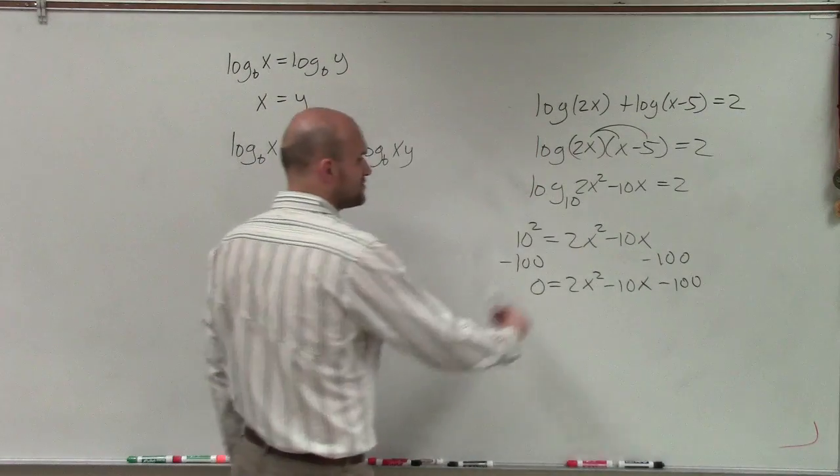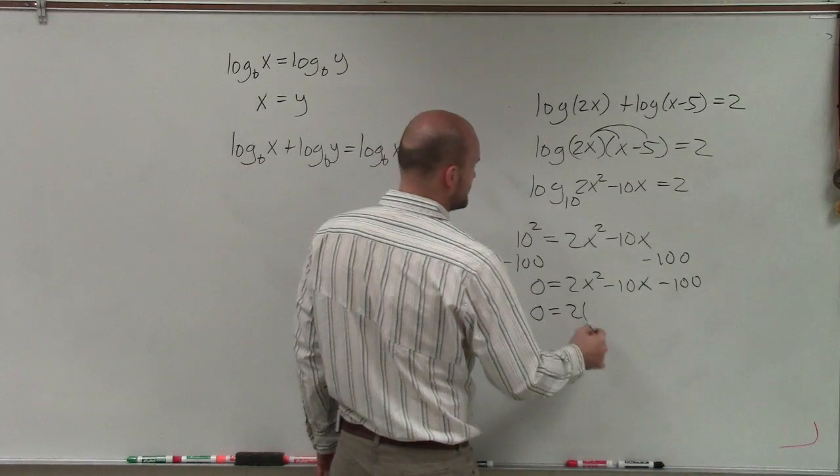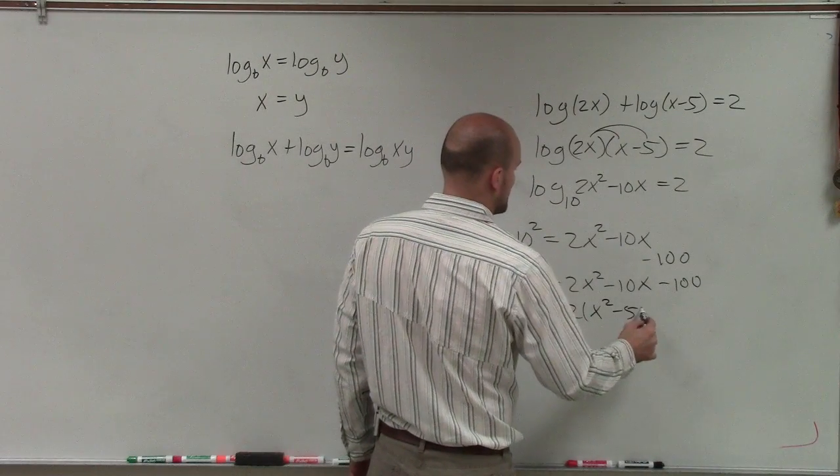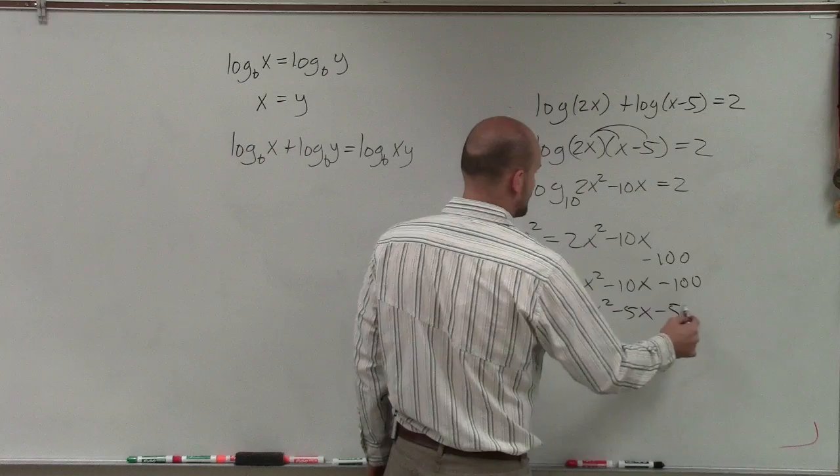So now, to solve this, what we have to do is factor out a 2. So 0 equals 2 times x squared minus 5x minus 50.